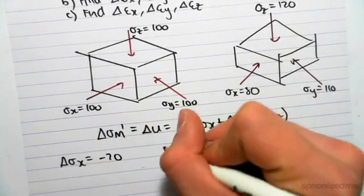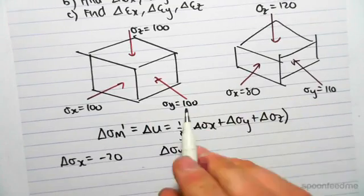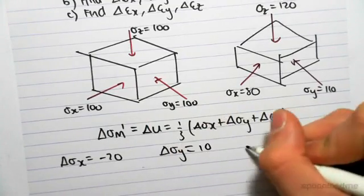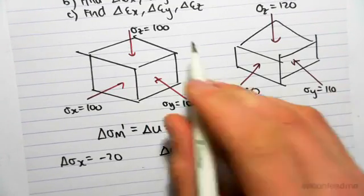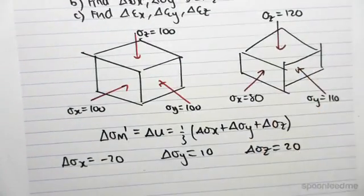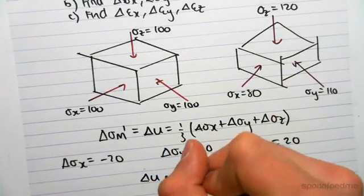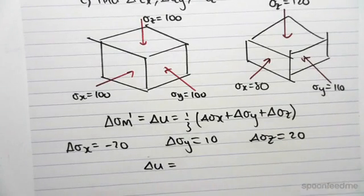Now we know from before that change in total stress x went from 100 to 80, so it's minus 20. Change in y went from 100 to 110, so it's plus 10. And change in z went from 100 to 120, so it changed by 20, which means we can find our change in pore water pressure.